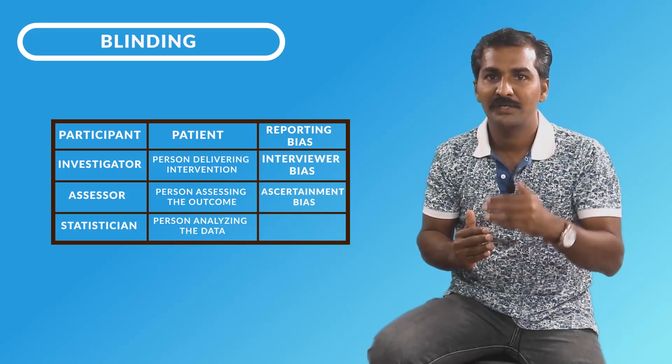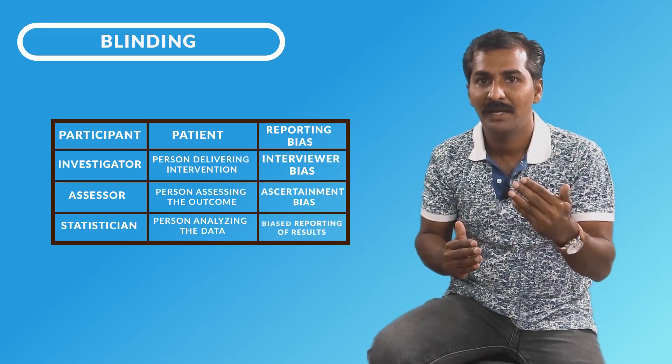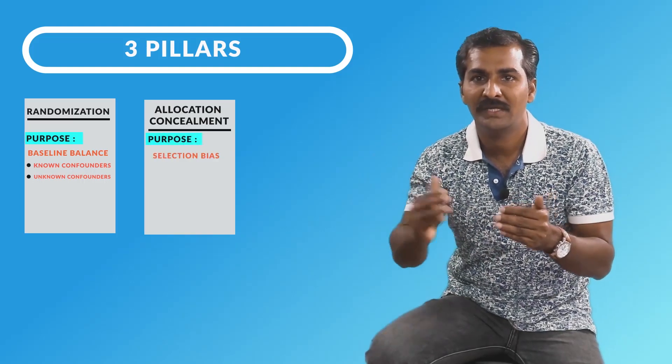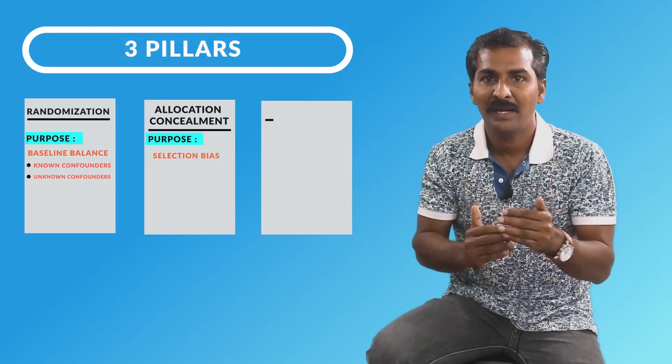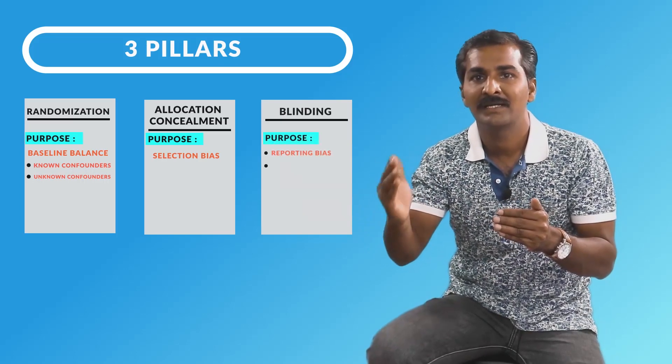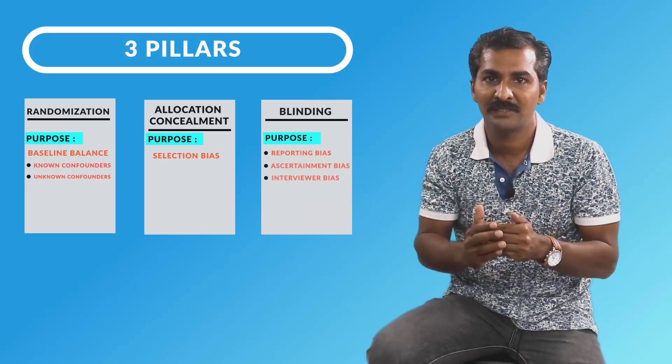So all these people need to be blinded to the nature of the intervention. To summarize: randomization's primary purpose is to achieve good baseline balance with respect to potential known and unknown confounders; allocation concealment's primary purpose is to take care of selection bias; and blinding's primary purpose is to take care of reporting bias, ascertainment bias, and interviewer bias.